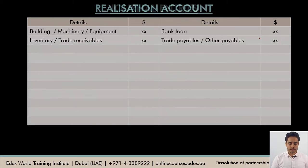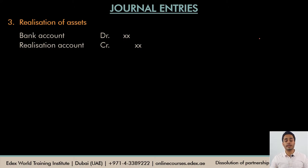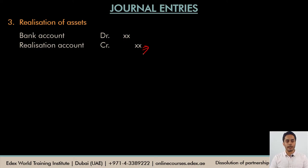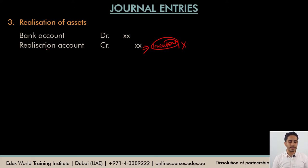Our next set of entries is to sell our assets — current and non-current — and receive cash or cheque for them. When the firm receives money for the assets realized, we debit our bank account and credit the realization account. A very common mistake students make here is to credit the individual asset account, for example crediting inventory. But we've already closed and transferred all the book values of assets to the realization account, so after that entry we cannot use any asset account again. Whenever assets are realized, debit the bank account and credit the realization account.